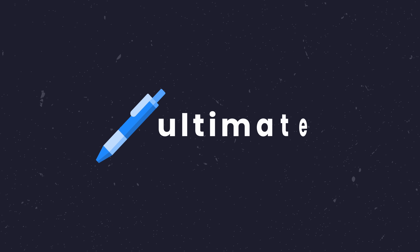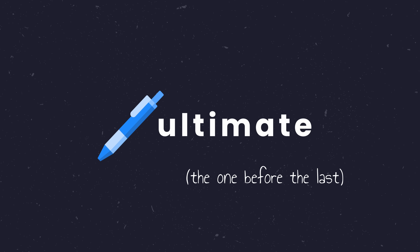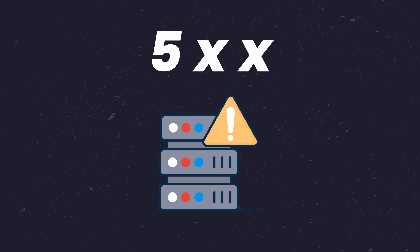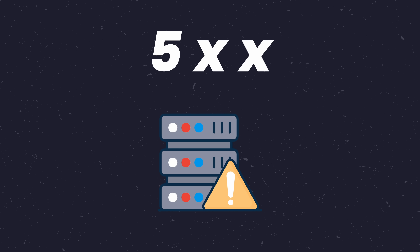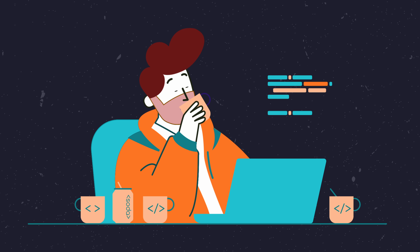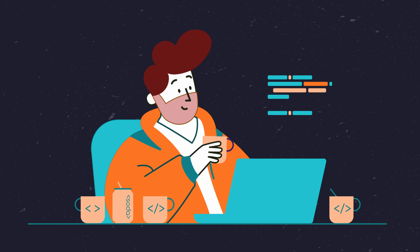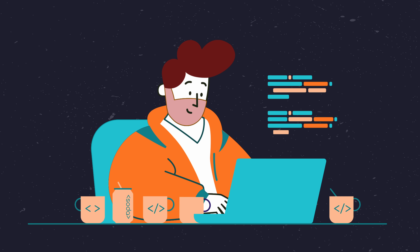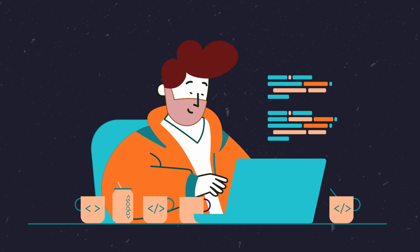We're now at our penultimate status code, and the only 500 in the list. If you're unaware, the 500 range is used for errors that have gone wrong on the server side, such as a failure or an internal network communication issue. Now, believe it or not, we developers have actually shown rather great discipline — or a lack of imagination — when it comes to 500-type errors, but there are a couple.